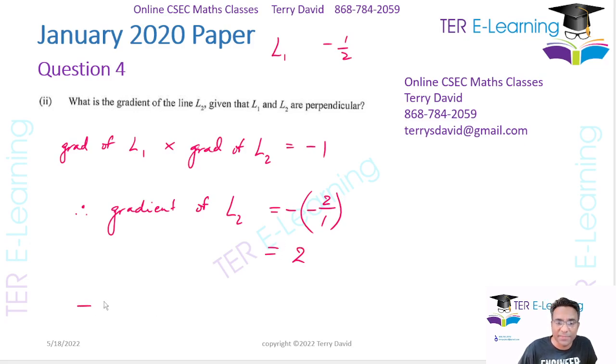So we can do a quick check. The gradient of L1 is minus a half. And if I multiply that by 2 over 1, this will cancel with this and I will get minus 1. So therefore, I am certain that this answer is correct. That's my gradient of my L2.